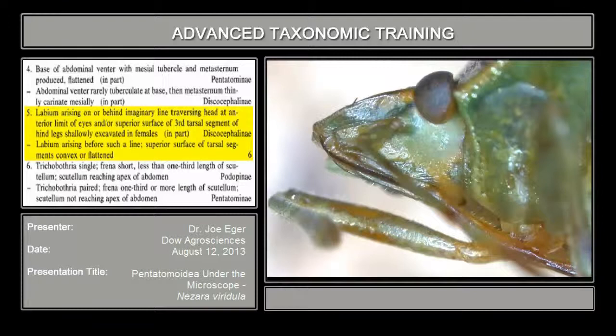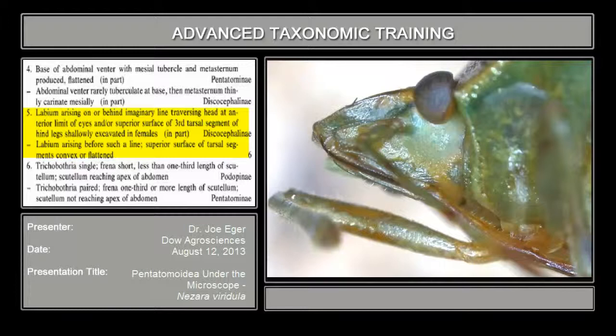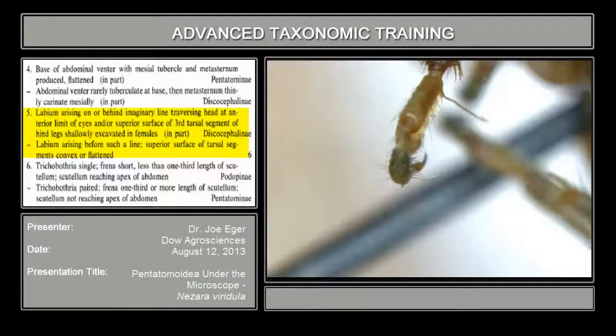Couplet number five: labium arising on or behind an imaginary line traversing the head at the anterior limit of the eyes, and/or the superior surface of the third tarsal segment of the hind legs shallowly excavated — or labium arising before such a line, with the superior surface of the tarsal segment convex or flattened. The labium in this bug arises well before the anterior limit of the eyes, and the last tarsal segment is fairly convex, not concave. So we do not have a discocephaline. We go to couplet number six.